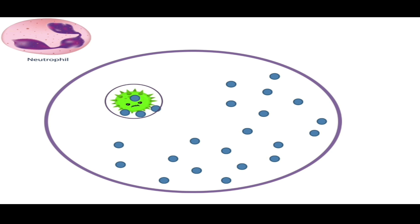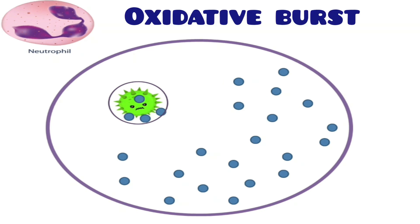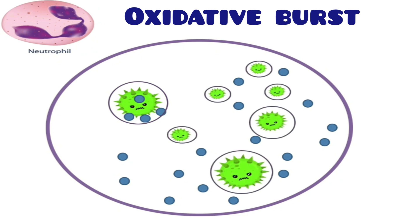This acidic pH kills many pathogens, but there are some pathogens that can survive in an acidic environment. The second way is the oxidative burst process: the neutrophil produces highly reactive molecules like hydrogen peroxide that destroy DNA and proteins, ultimately killing the neutrophil itself. So we can say the neutrophil commits suicide, taking many pathogens with it.